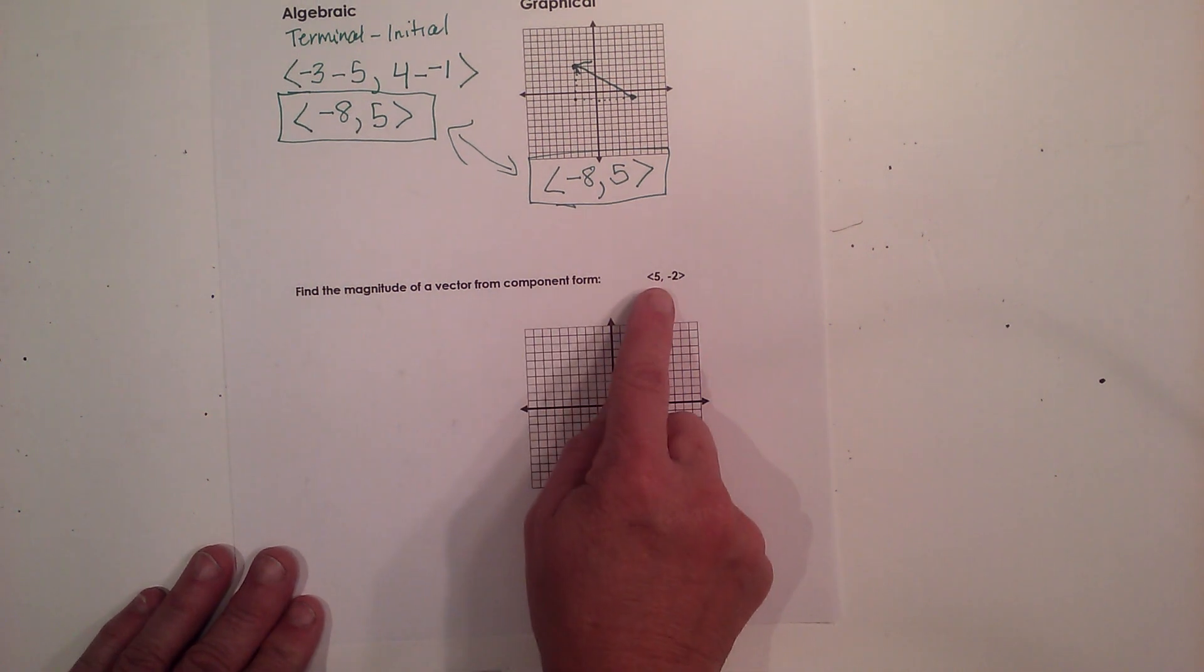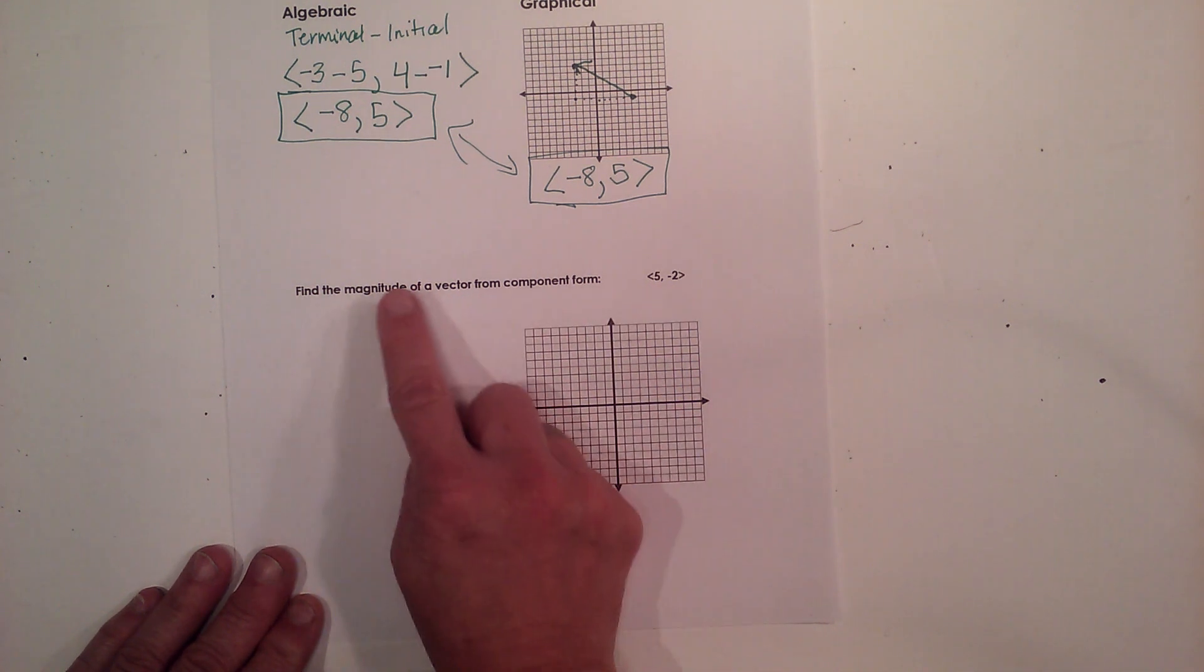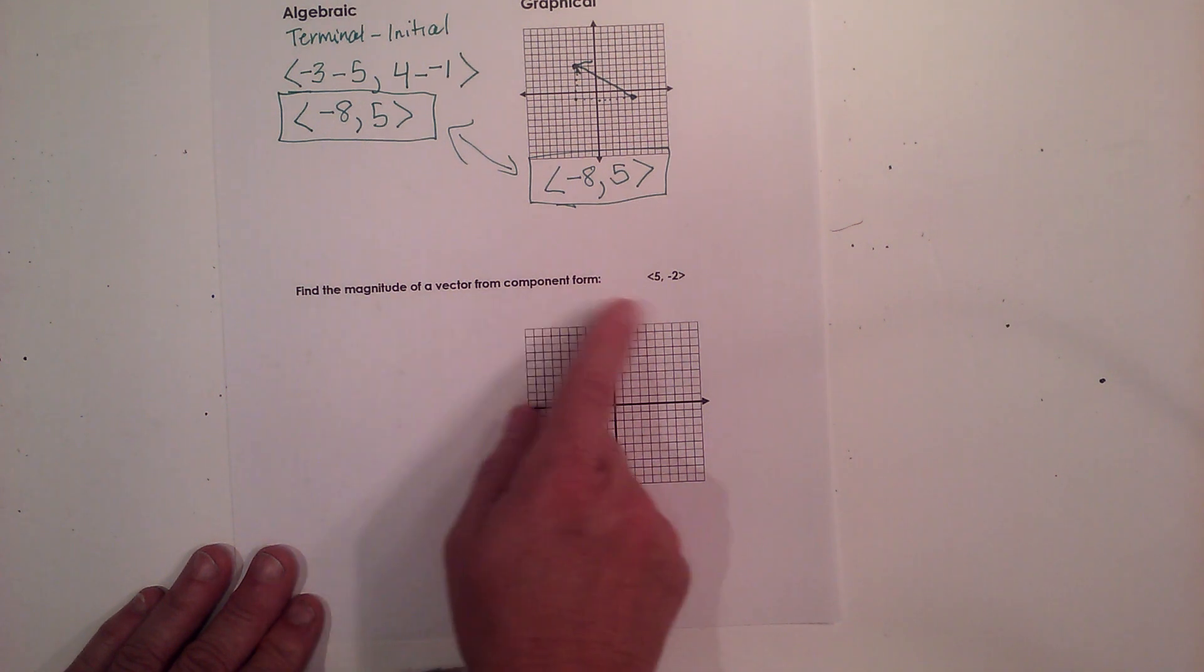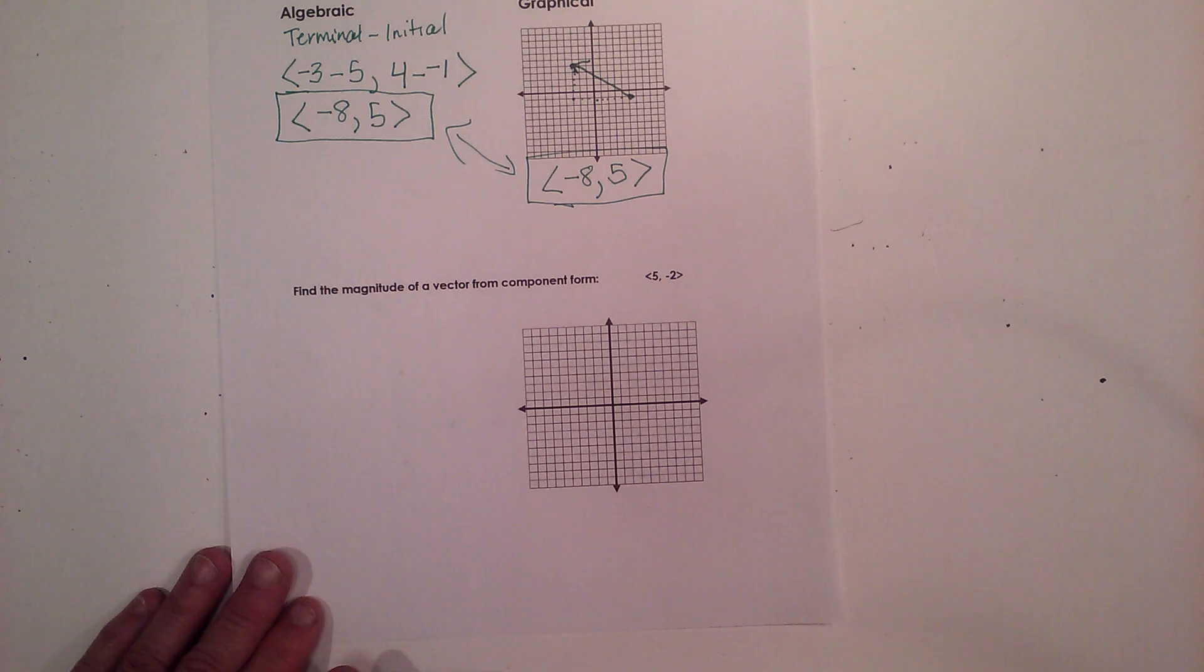So we have a vector and the vector is 5, negative 2. And I want to find the magnitude. Well, magnitude just means length. So I'm going to find the length of the vector connecting 5 to negative 2.